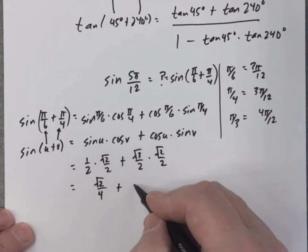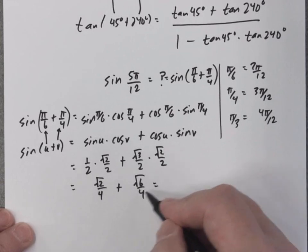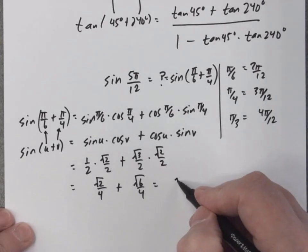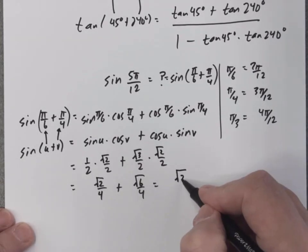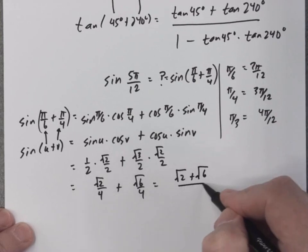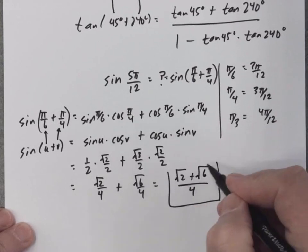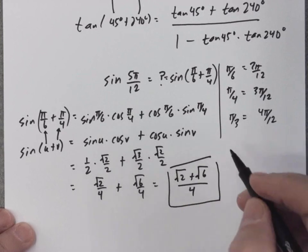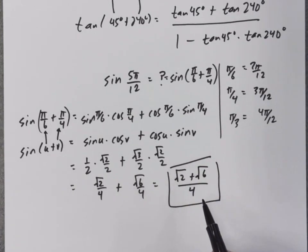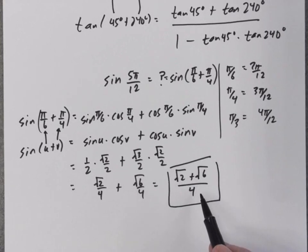Multiplying the first term gives square root of 2 over 4, and the second term gives square root of 6 over 4. Since they have a common denominator, I can add the fractions into one, and that is the correct exact answer.